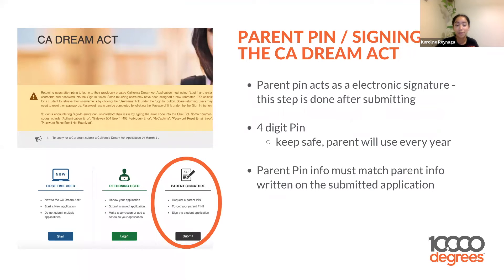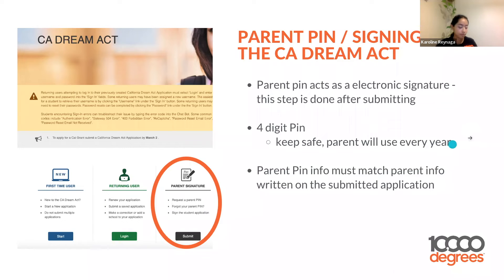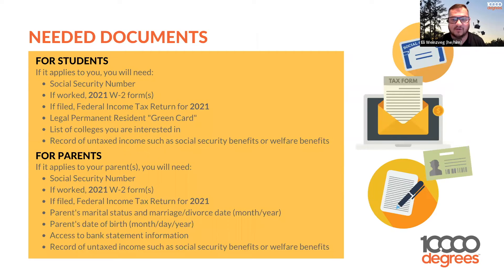Similar to the FAFSA, parents also create a parent PIN for the California Dream Act, which acts as an electronic signature. This step is done after submitting — it is a four-digit PIN, so keep it safe, as you will use it every year. The parent PIN information must match the parent information written on the submitted application. If you have any questions, go ahead and type those in the chat.